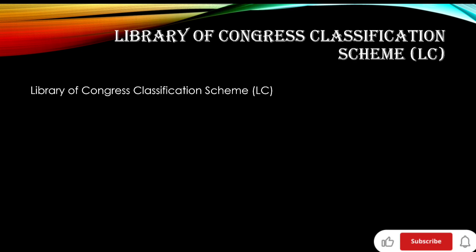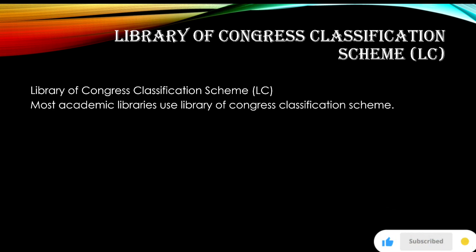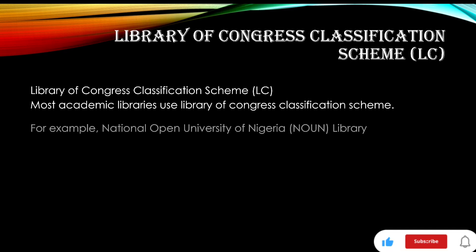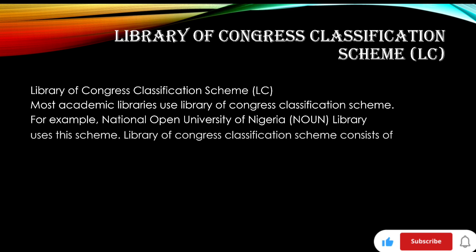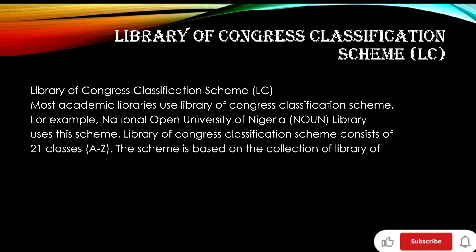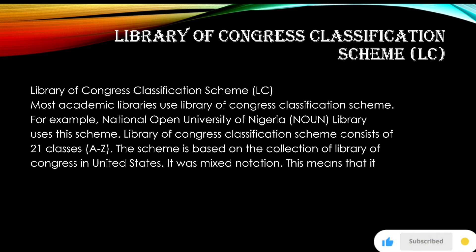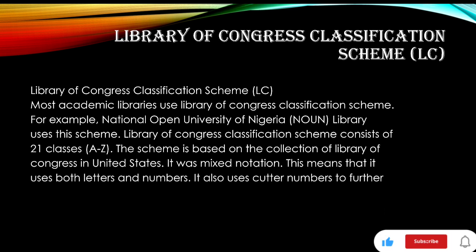The Library of Congress classification scheme (LC) is used by most academic libraries — for example, National Open University of Nigeria uses this scheme. The LC scheme consists of 21 classes, A to Z. It is based on the collection of the Library of Congress in the United States. It uses mixed notation, meaning it uses both letters and numbers. It also uses cutter numbers to further specify a document.